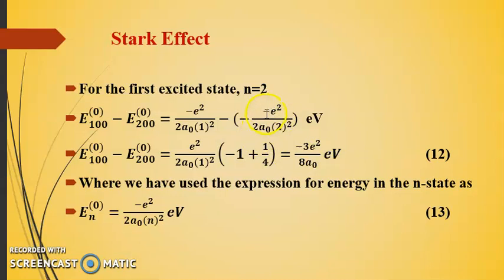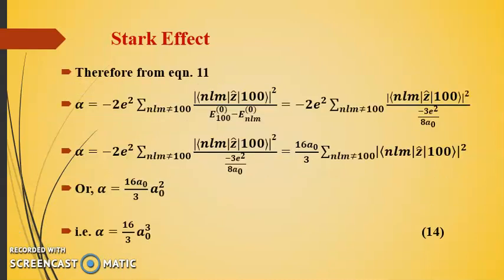We have used this expression for energy as discussed before. Now using this expression, the polarizability becomes alpha equals to minus 2e squared. For this all summation sign we have this expression as we did calculation in the previous slide. Further we get calculation with denominator and the numerators, and we are left with 16a_0 by 3 and the summation term only the numerator term here. This is a standard integral which solves to be a_0 squared.